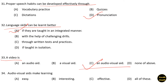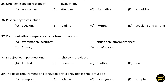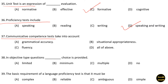Next question: Audio-visual aids make learning easy, interesting, and effective. Option D is the correct answer. Next question: Unit test is an expression of formative evaluation. Next question: Proficiency tests include speaking and writing. Next question: Communicative competence tests take into account — option A: grammatical accuracy, option B: situational appropriateness, option C: fluency, option D: all of the above. Option D is the correct answer.